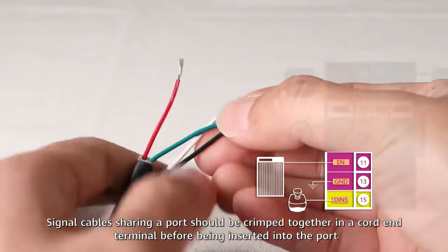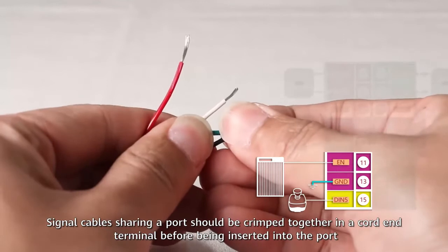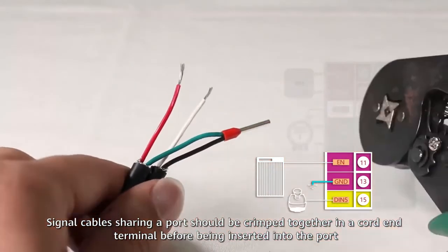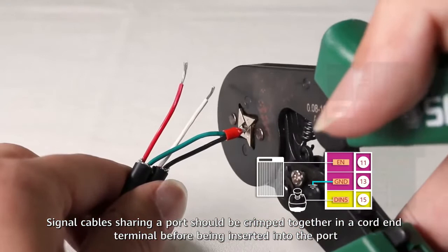Signal cables sharing a port should be crimped together in a cord and terminal before being inserted into the port.